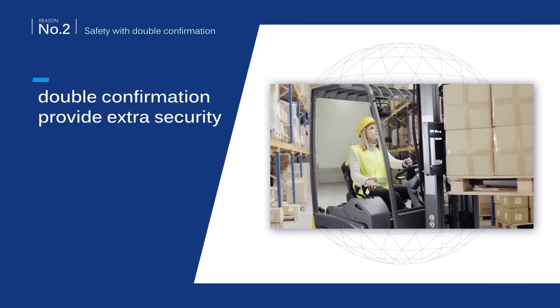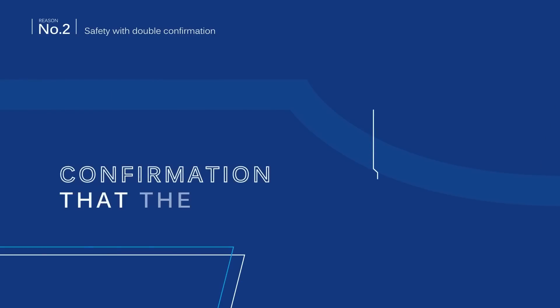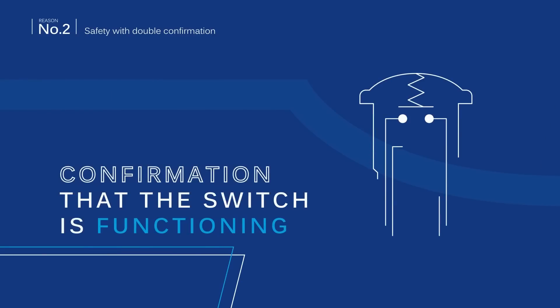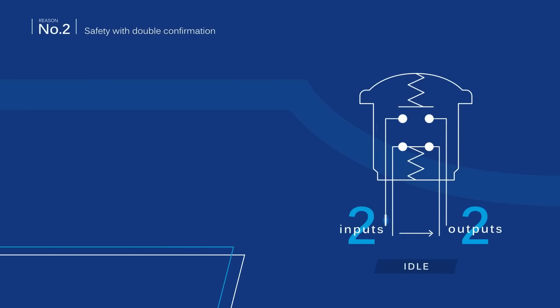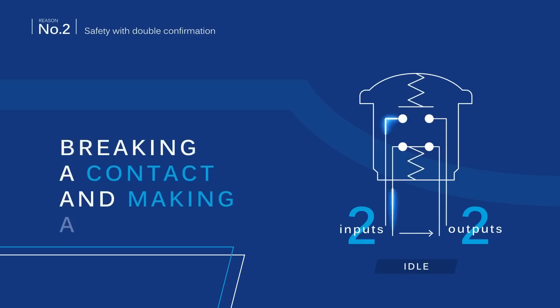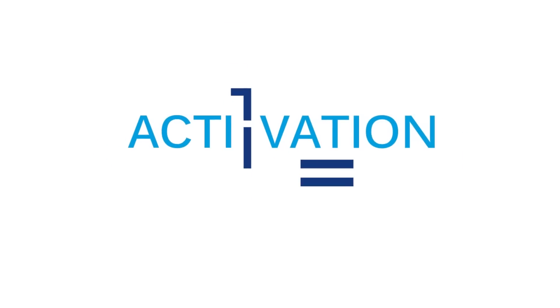For example, in parking brakes on a forklift. The system gets constant confirmation that the switch is functioning from the normally closed circuit. However, having only an NC function can be dangerous, as a malfunction could activate the brakes. With NC-NO function, it takes both breaking a contact and making a new one to activate the parking brakes. One activation, double confirmation.